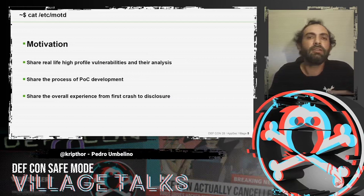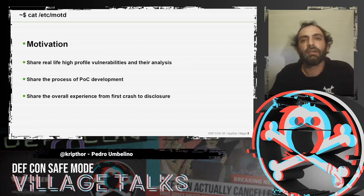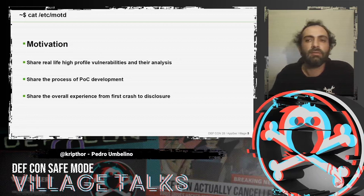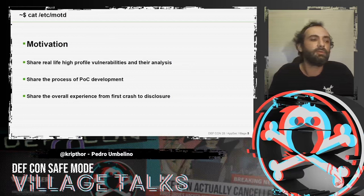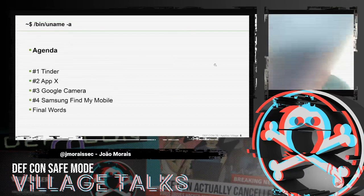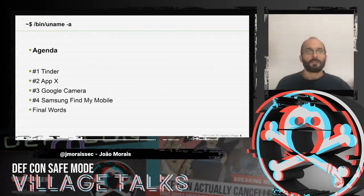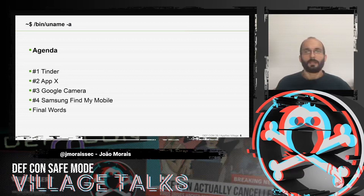We wanted to share the overall experience from first crash until the disclosure process. For that we are going to use four different examples of vulnerabilities in four different apps — some from our older work, and some being disclosed here firsthand. We're going to present four cases: Tinder, App X (an app whose real name we cannot say), Google Camera, and Samsung Find My Mobile — followed by final key takeaways from this bug foraging experience.